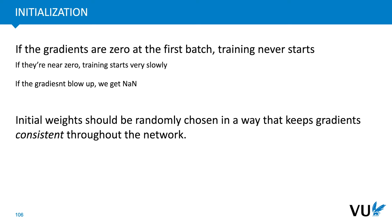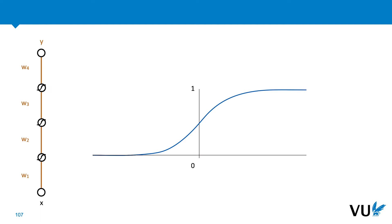On the other hand, if the gradients blow up then we get not a number values and our program crashes or never learns anything. So what we're looking for when we choose the initial weights is a set of random values for which the gradients are kept consistent throughout the network, not too big and not too small from start to finish at the first batch. And after that learning starts and learning takes control of the values of the weights. So it's mostly for that first batch that initialization is important.